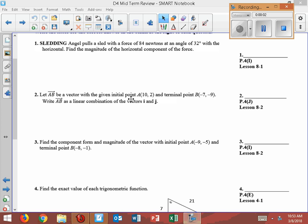Number one, sledding. Angel pulls a sled with a force of 84 newtons at an angle of 32 degrees of horizontal. Find the magnitude of the horizontal component of the force.